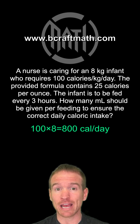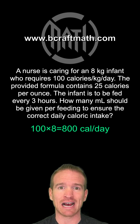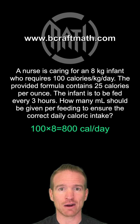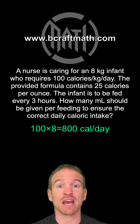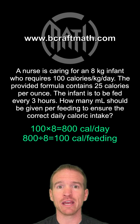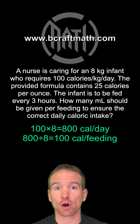But that's per day — we need per feeding. Since the infant is getting fed every three hours, three-hour intervals will occur a total of eight times per day: 24 hours divided by three equals eight feedings per day. So let's take that 800 calories per day, divide that up into eight equal feedings, which gives us 100 calories per feeding.